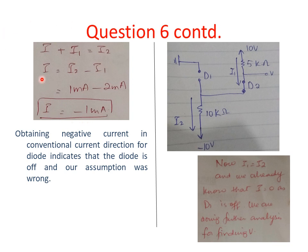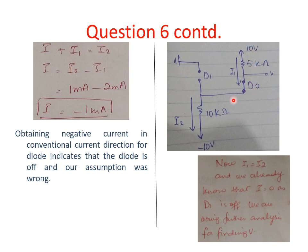A negative current means the diode is off and our assumption was wrong. I have redrawn the circuit showing D1 as off and D2 as on. Since D1 is off, the current I through D1 is directly zero. Now I1 and I2 currents should be equal, because the D1 branch has no current, making this a series branch where current flows from the 10V source through to the other end.